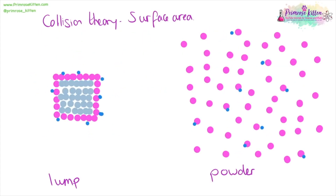When we have a lump of something, it has less surface area, so there is less space to react. The blue dots can only react with the pink dots on the outside — the purple dots on the inside are exactly the same thing, they're just not available to react. Whereas in powder format, the pink dots are all spread out, so they're all available to react. Assuming we have exactly the same mass, the powder has more surface area than the lump, so more particles are available to react.